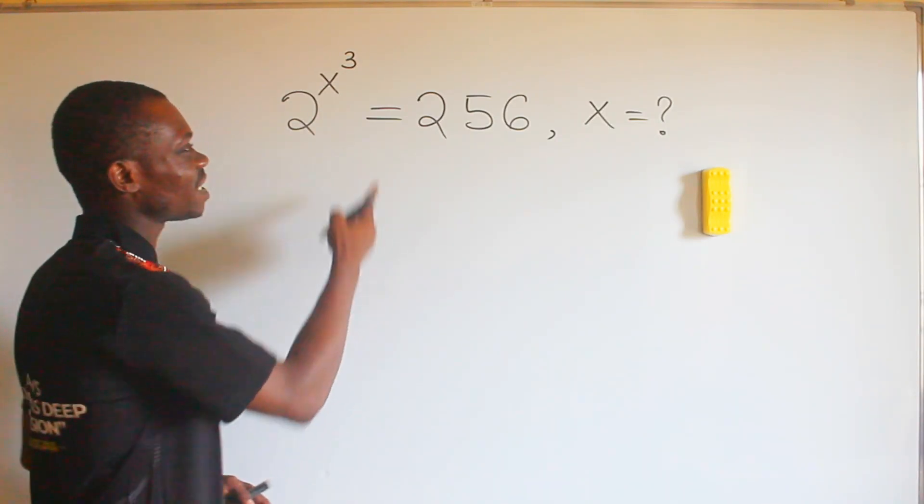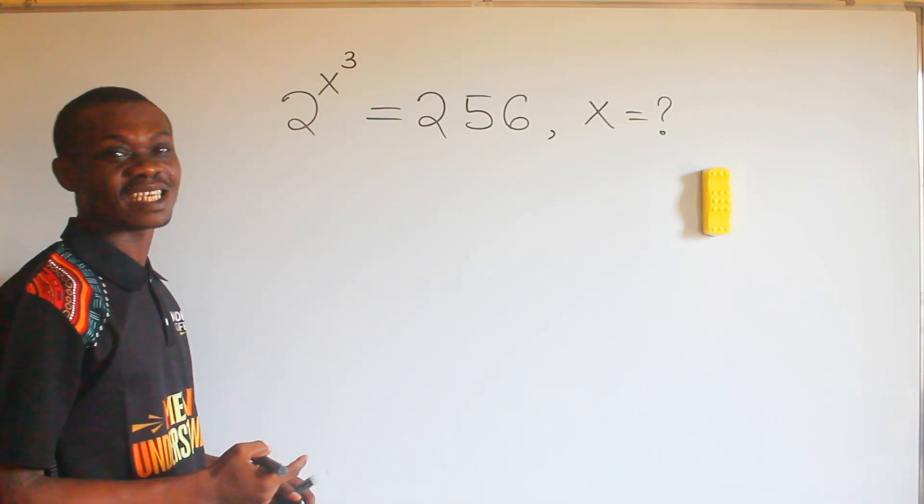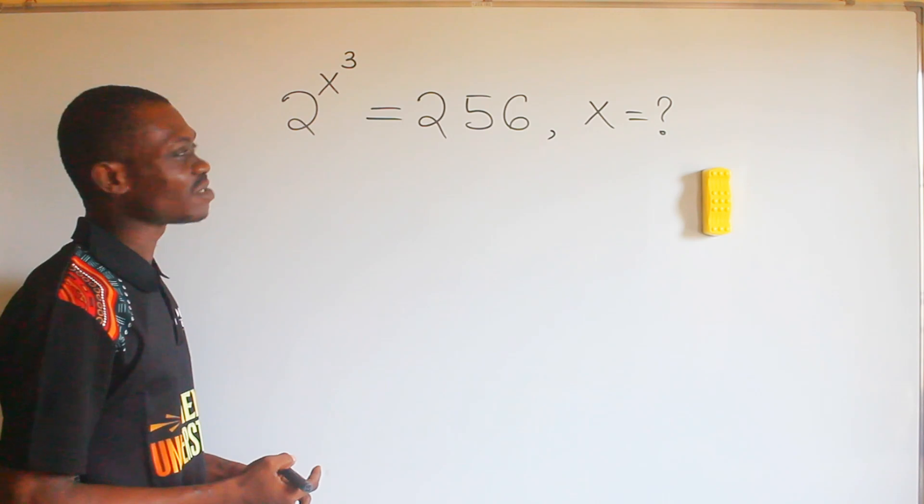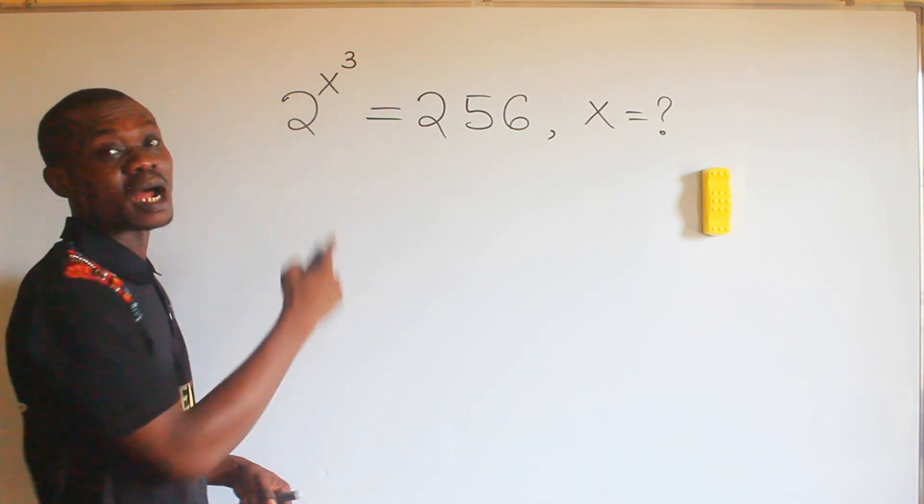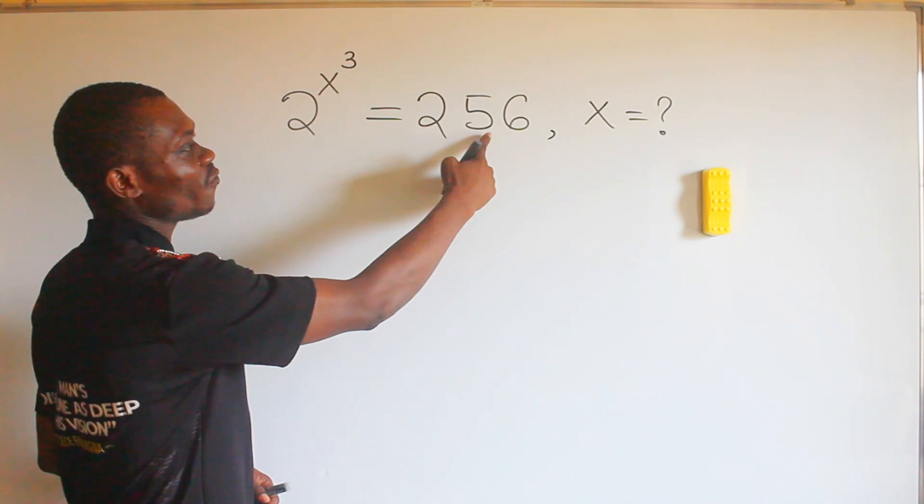Hello everyone, you're welcome to my YouTube channel. Okay, can we do this in the next 60 seconds? Of course it should be less. 2 raised to the power of x to the power of 3 equals 256, we need to find the value of x.